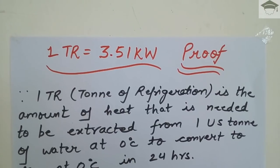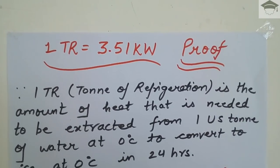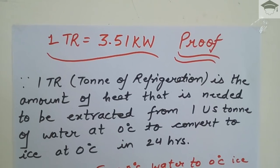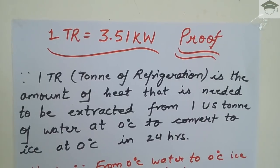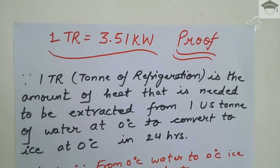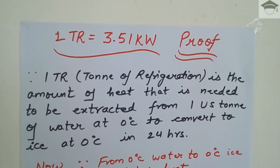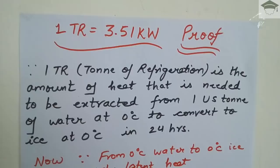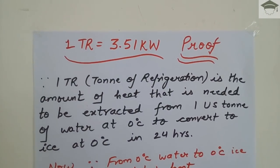In this video I will be explaining what is one ton of refrigeration and how one ton of refrigeration is equal to 3.51 kilowatt. Students tend to just mug up this value — that 1 TR is equal to 3.51 kilowatt — without knowing how it is derived. I will be showing you the complete derivation.